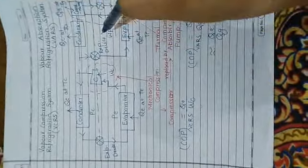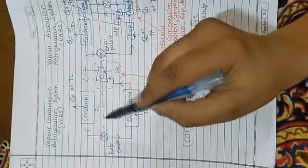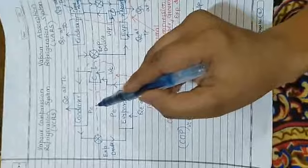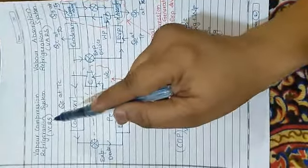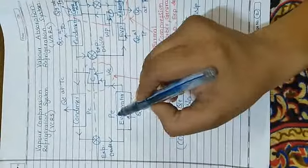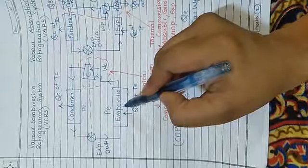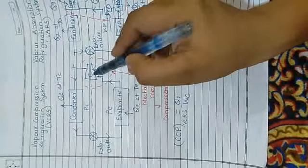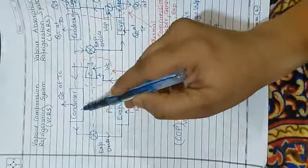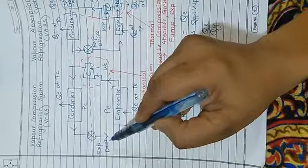Now first before we see vapor absorption system, we will quickly revise vapor compression refrigeration system cycle. As you know the elements of vapor compression refrigeration cycle are evaporator, compressor, condenser and expansion device.